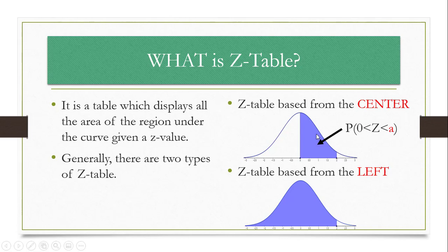The symbol for the Z-Table based from the left will be different — it would be the probability of Z is less than A. Since we have a particular value of A, all the area to the left of that value is included, which is equal to 2 in this case.